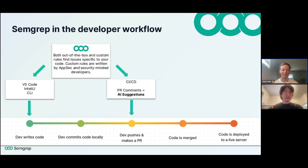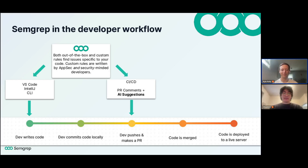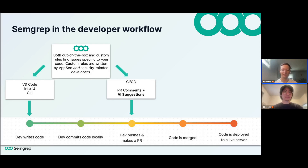As developers write code in their VS Code IDE, lines of code will actually get highlighted and give them recommendations on how to make their code more secure — that's about as early as you could possibly get. This is really to avoid the ultimate pain point where developers go through this whole workflow only to find out hours later that a security tool ran and there's a vulnerability. This is also majorly important when blocking is considered, or if you have license compliance requirements — a developer might have to rework their entire PR if they reach the end of the workflow with a non-compliant dependency.